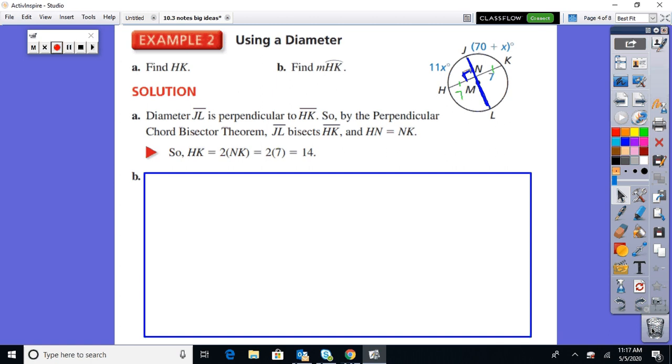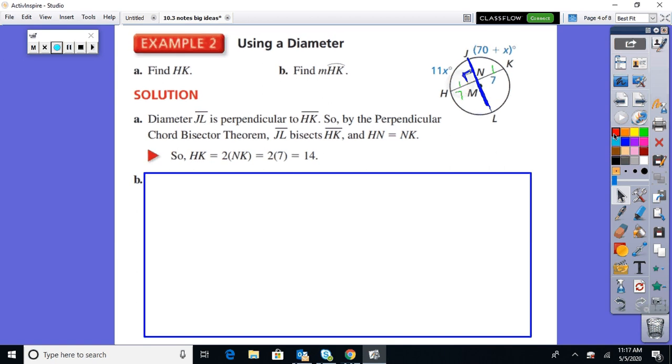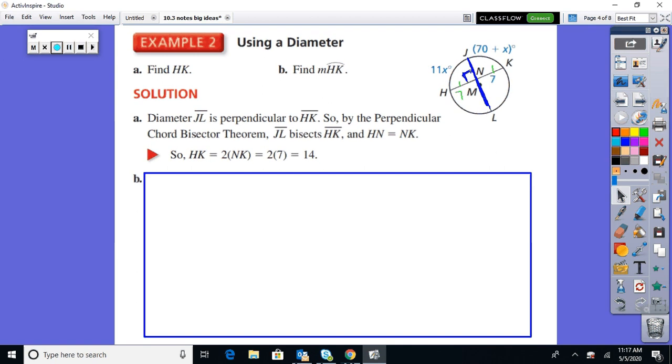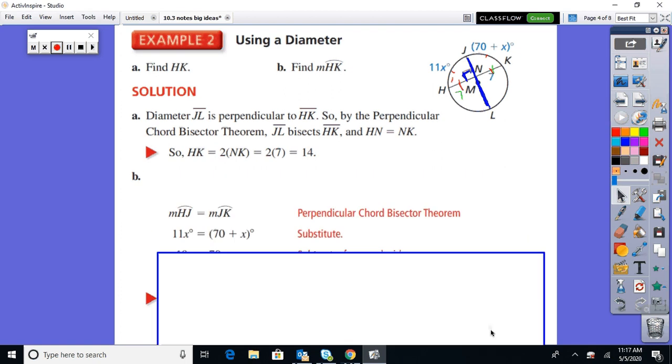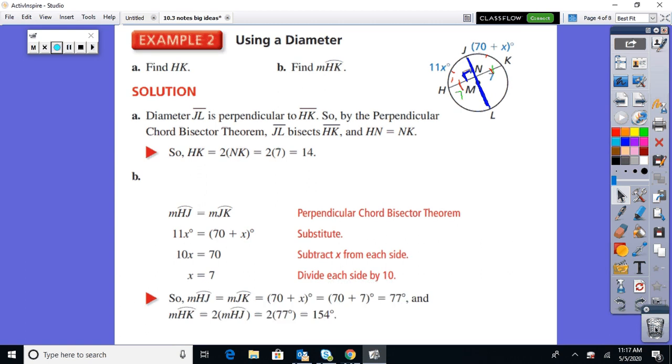Now part B. Find arc HK. Check it out. If I know that the chords are the same, perpendicular bisector, then I know that the arcs are also the same. So therefore, I can just set 11x equal to 70 plus x. And it all comes back to the theorems that we just discussed.